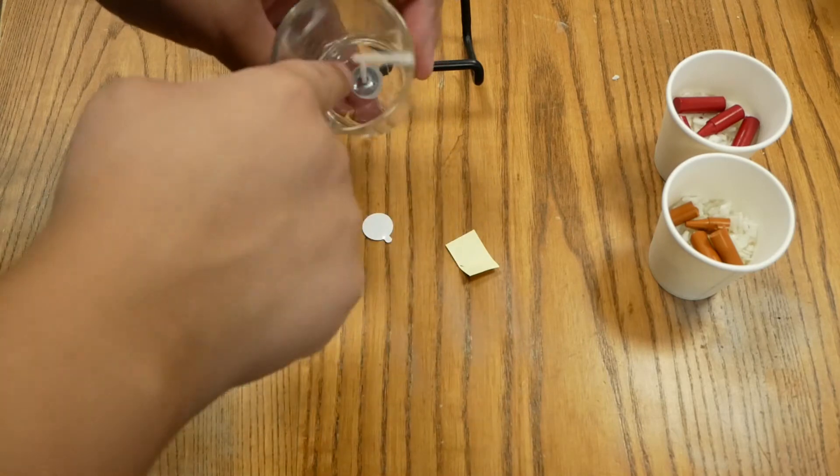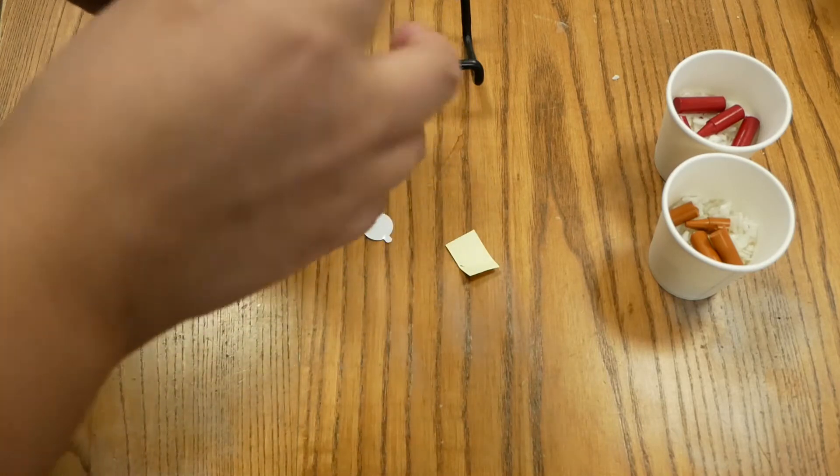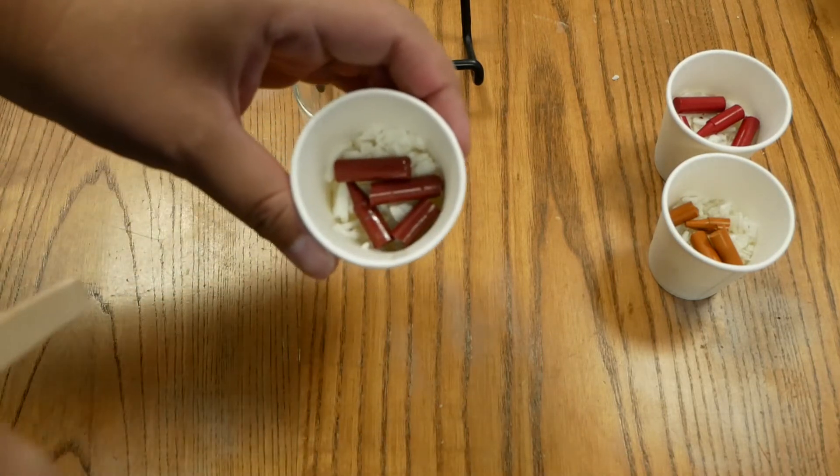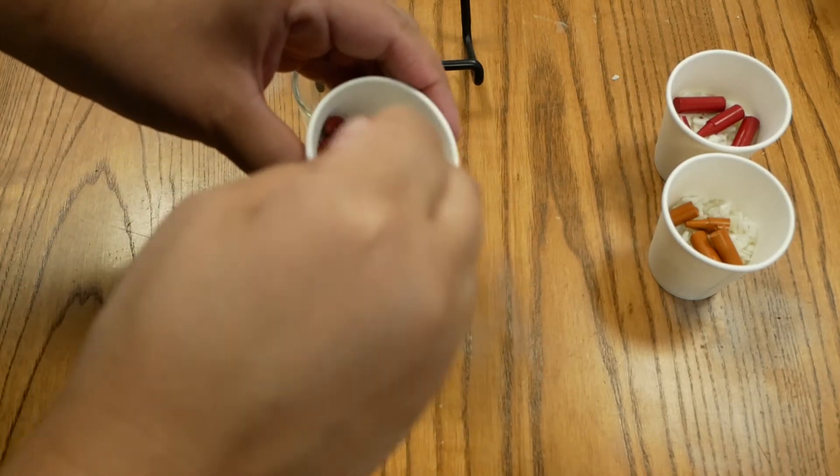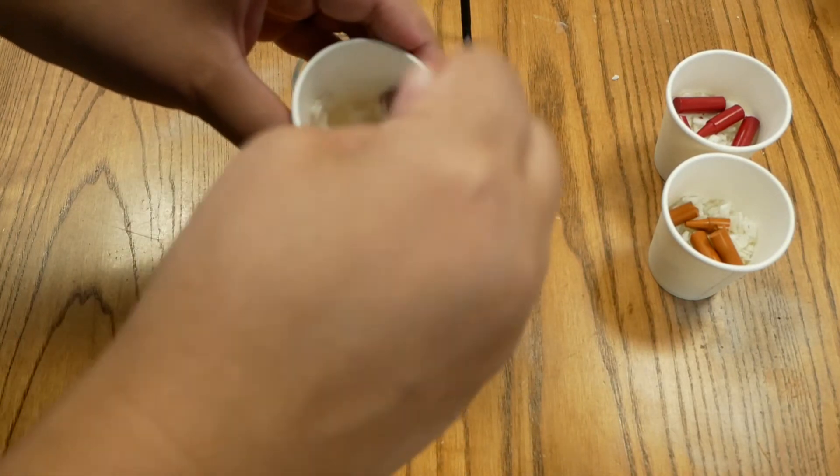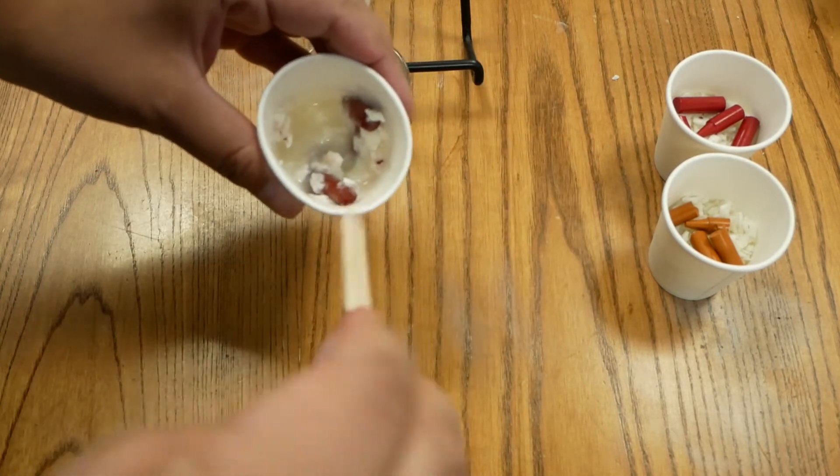While that's in the microwave, put the sticker on the bottom of the wick and stick it in the center of your glass votive. After 60 seconds, take one of the popsicle sticks and mix together the crayon and wax. Then stick it back in the microwave for another 60 seconds.